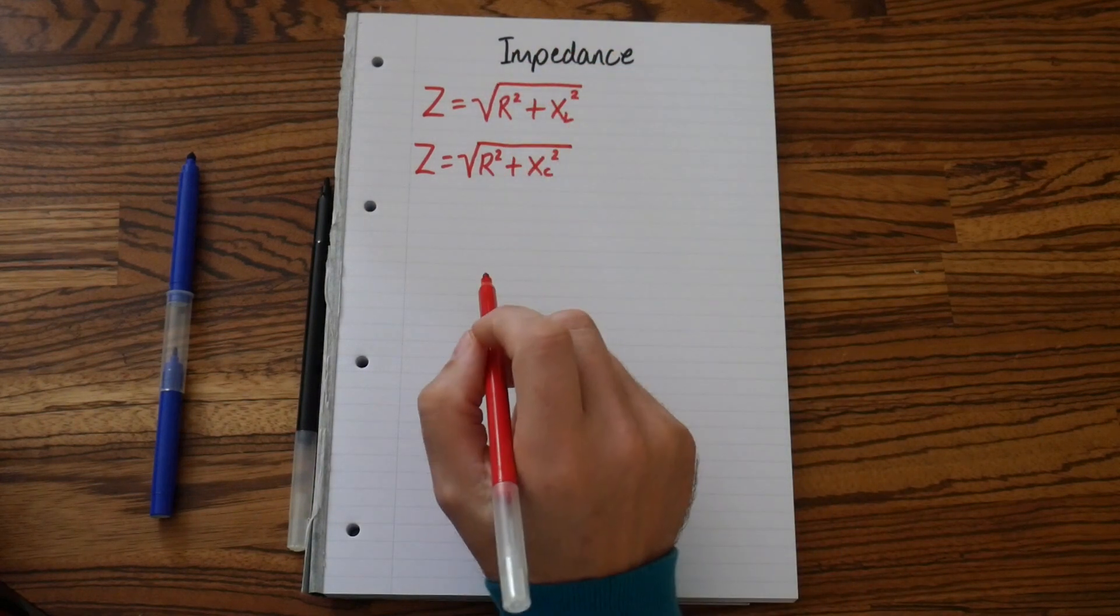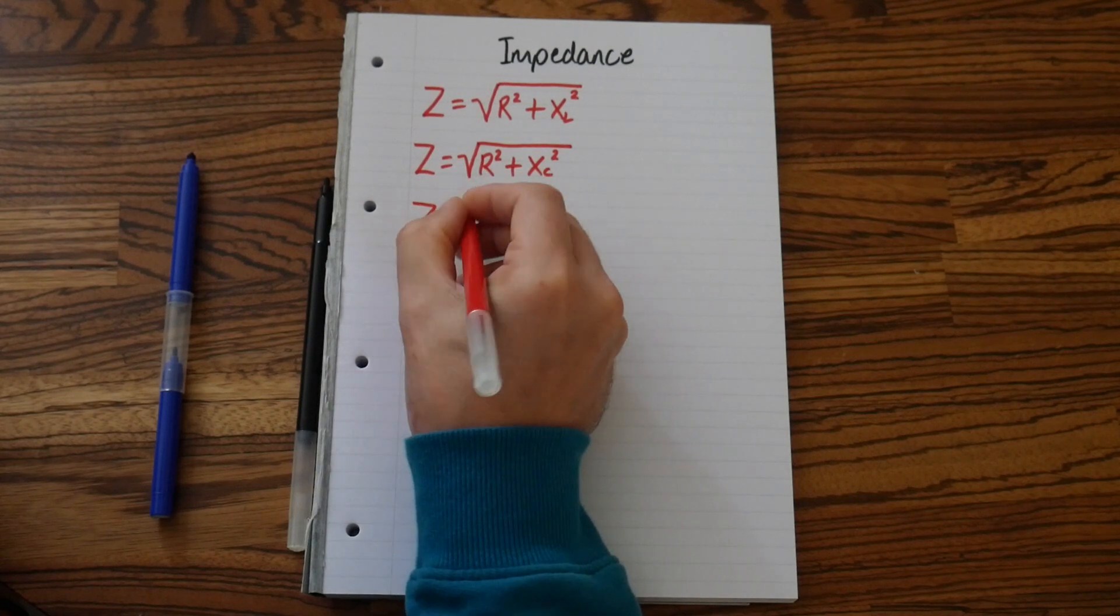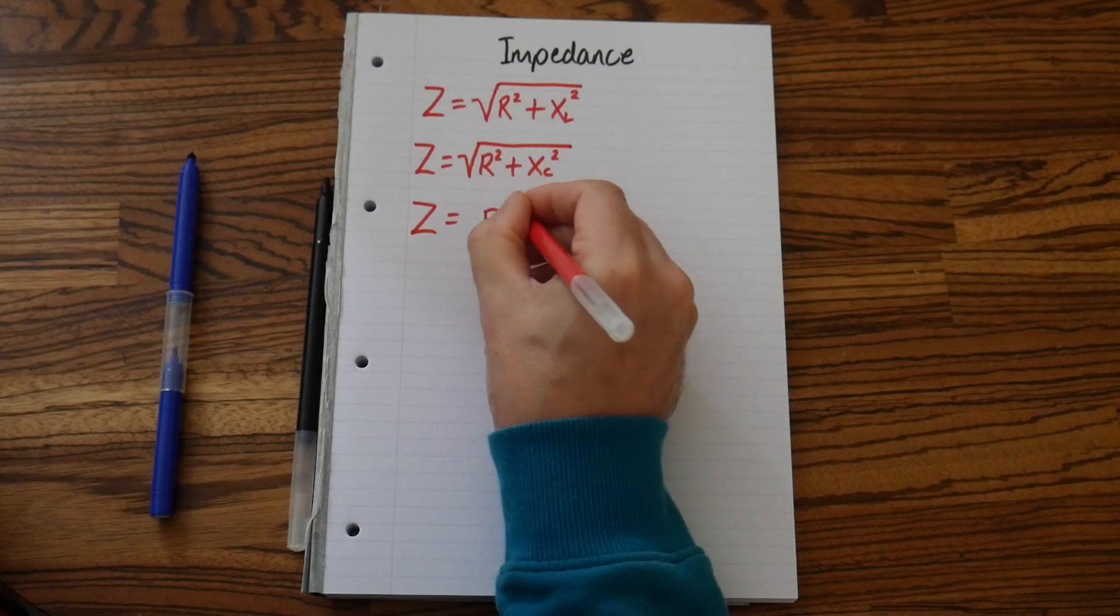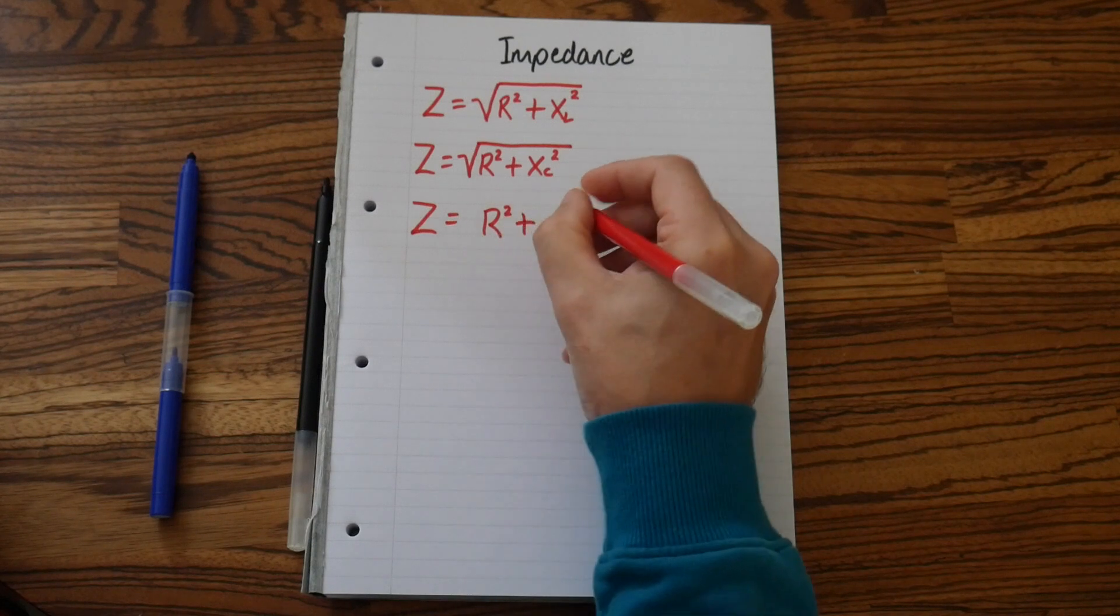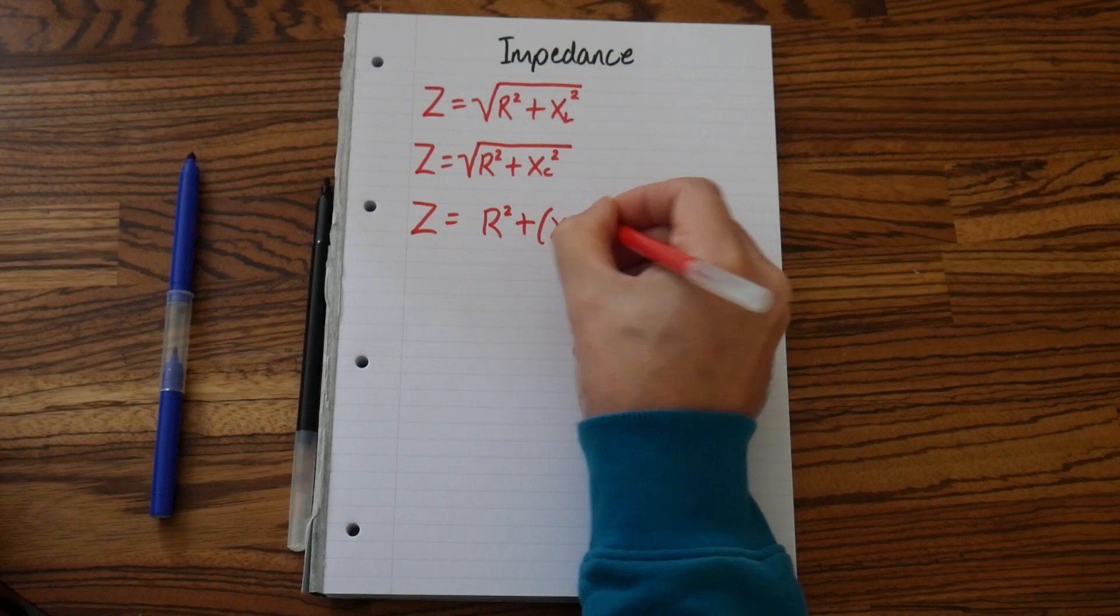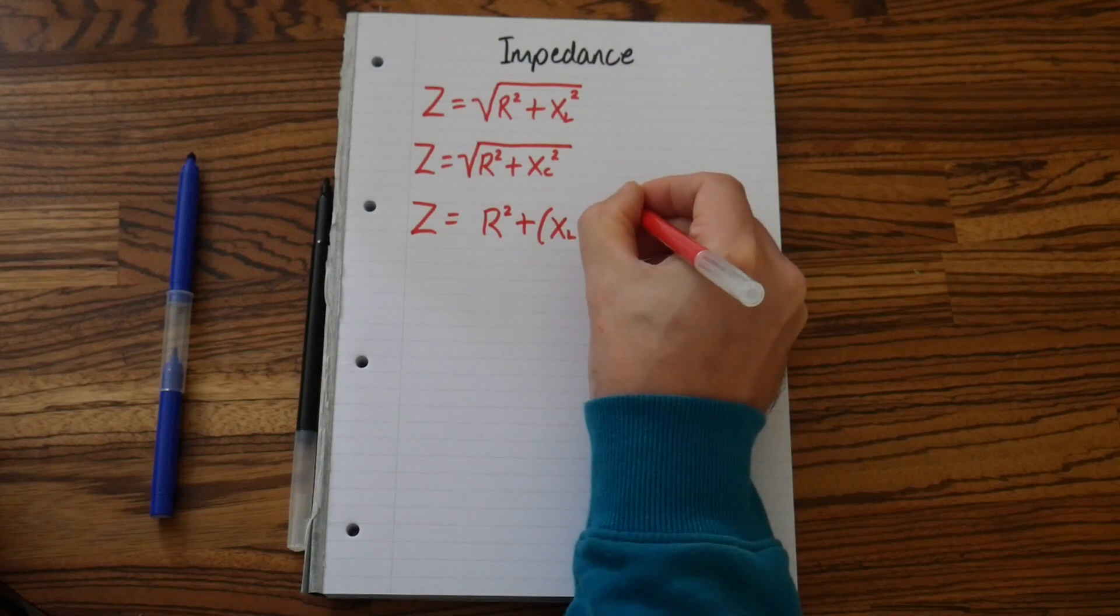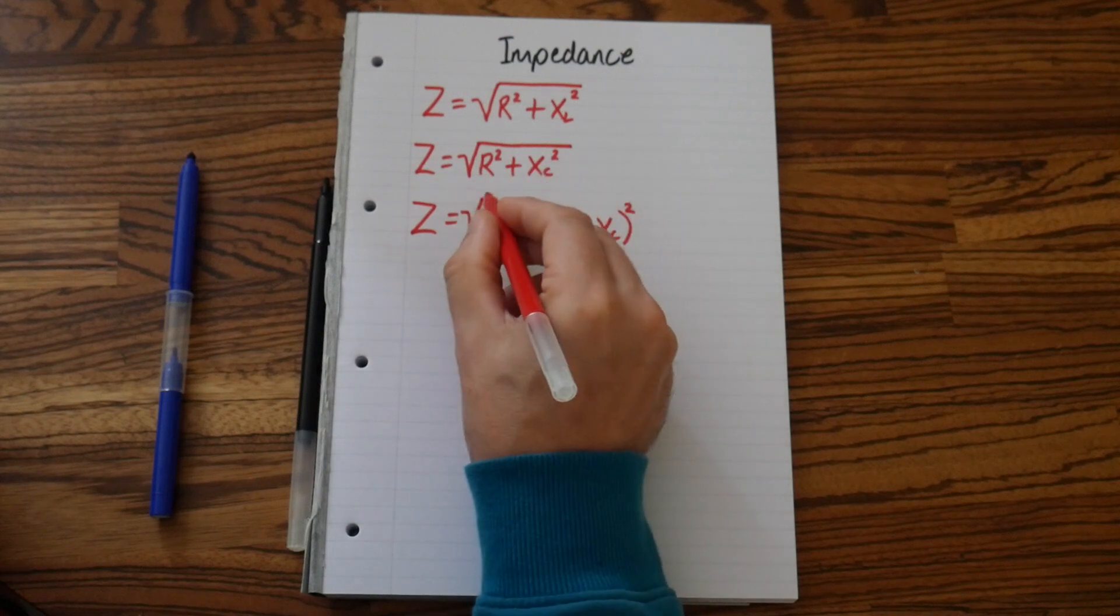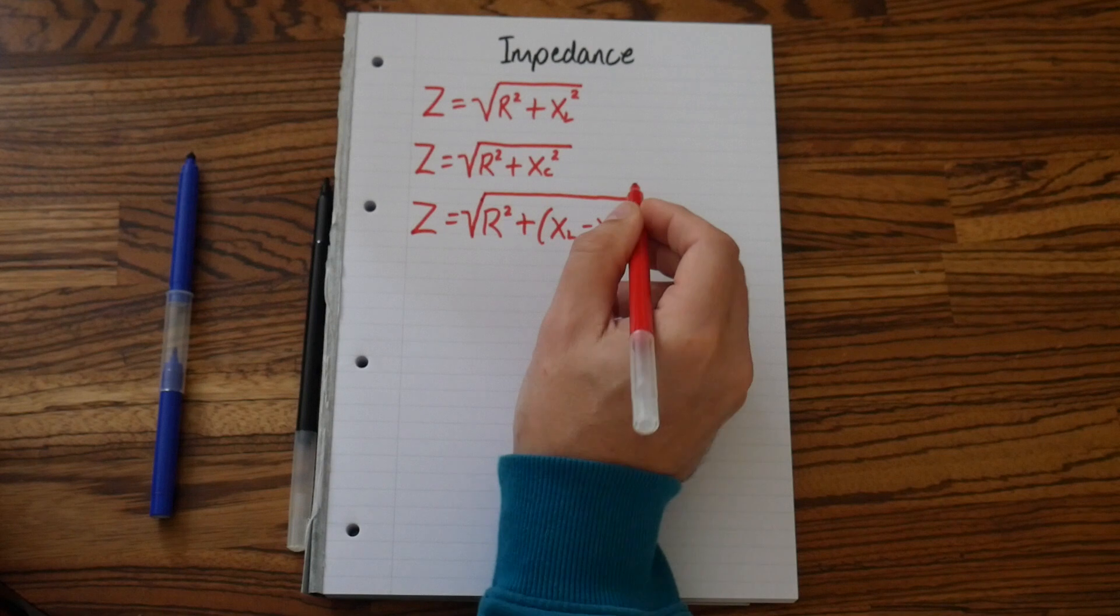And the last one is Z equals, and we have R squared plus open brackets, XL minus XC, close bracket, and then we square the bracket. And that is all square root.